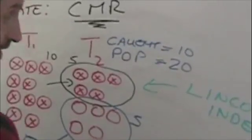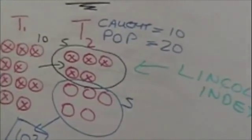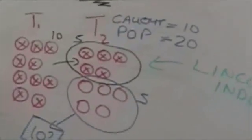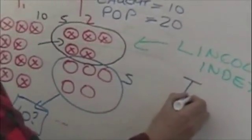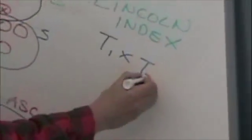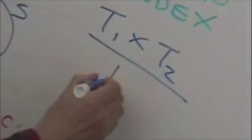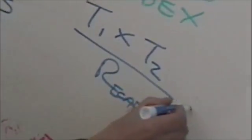Really, when ecology was in its infancy, people first started to count animals rather than just make Victorian-style collections. And he said that T1 times T2 divided by the number of recaptures equals the size of the population.